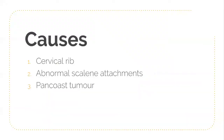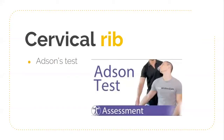Causes include cervical rib, abnormal scalene attachments — which can only be diagnosed on clinical examination — and Pancoast tumor, which is a tumor at the apex of the lungs. In inspection, when checking both supraclavicular fossae, a swelling may be visible in the supraclavicular fossa if a Pancoast tumor is present.